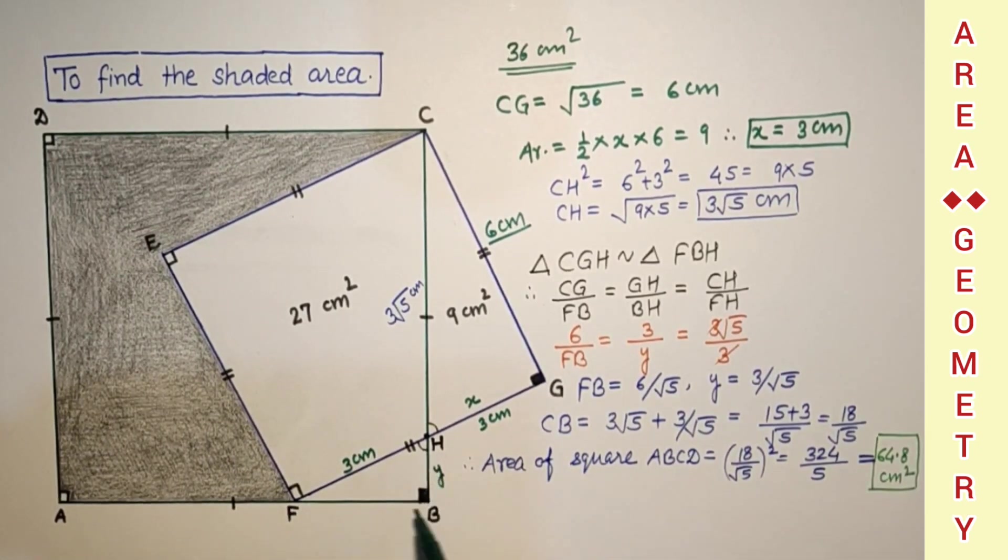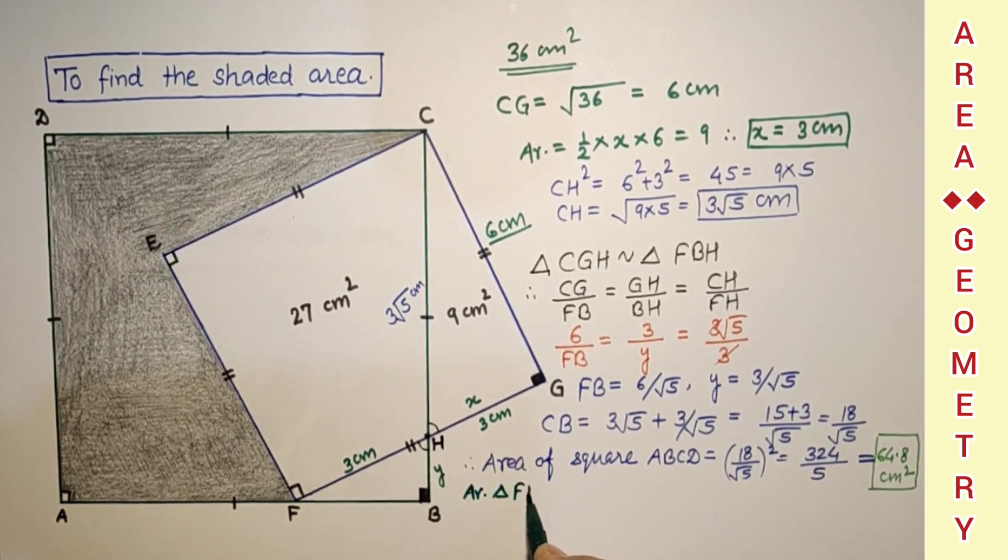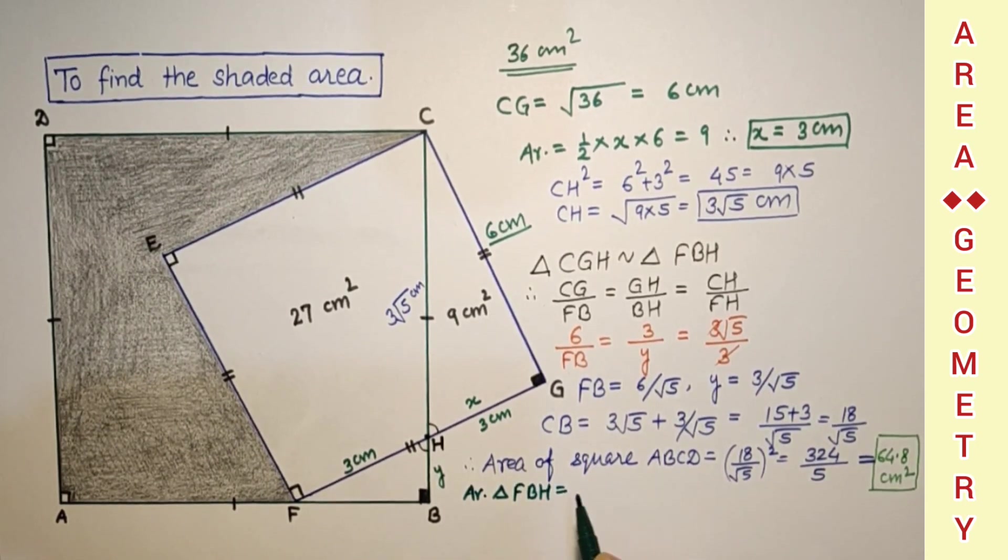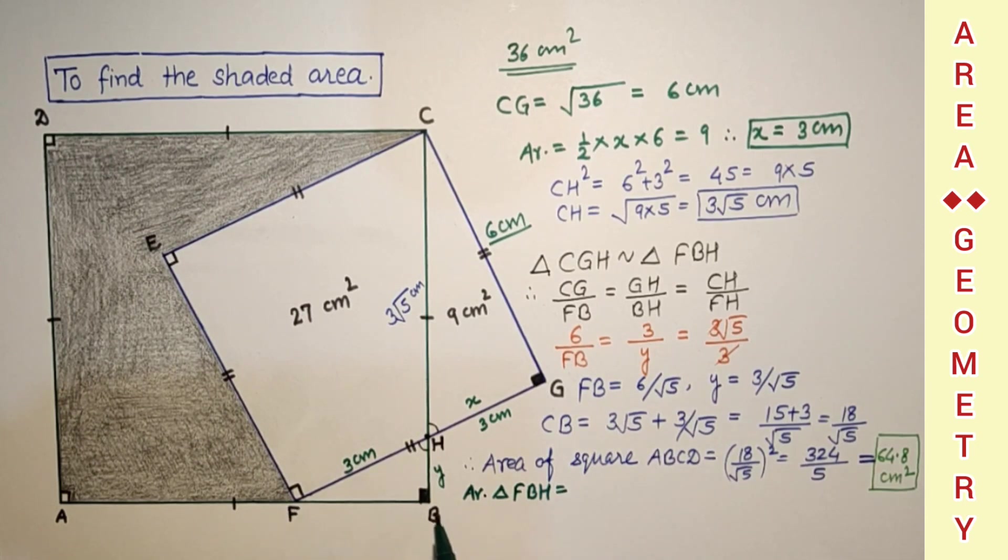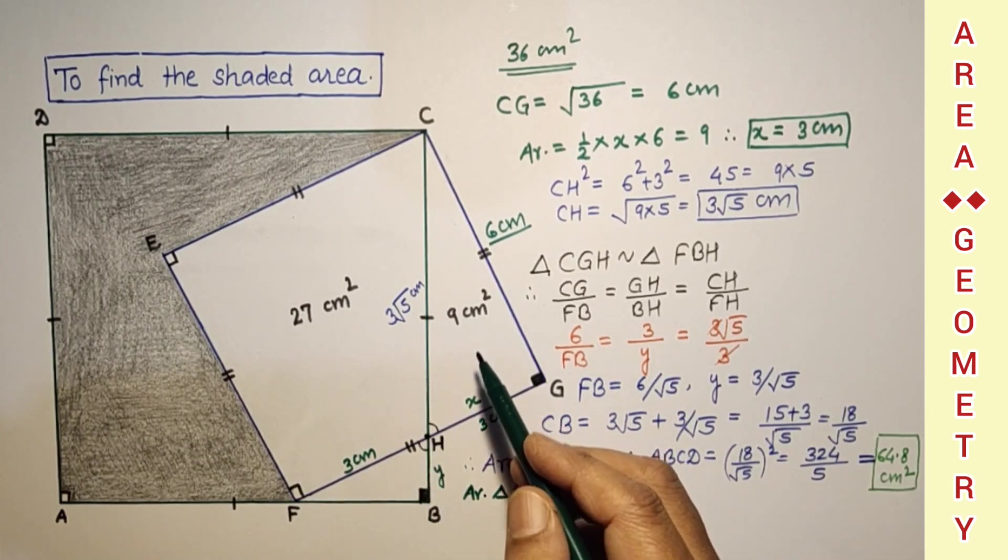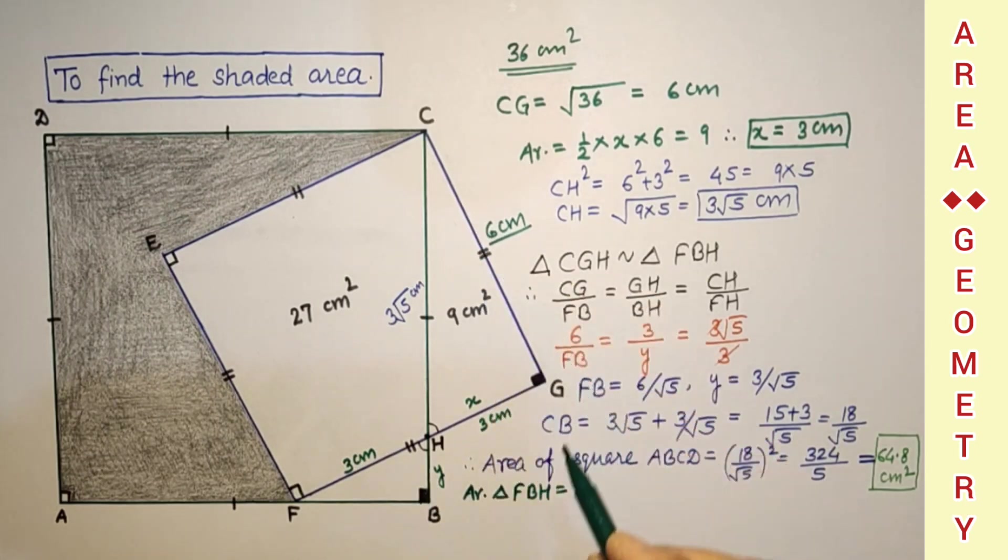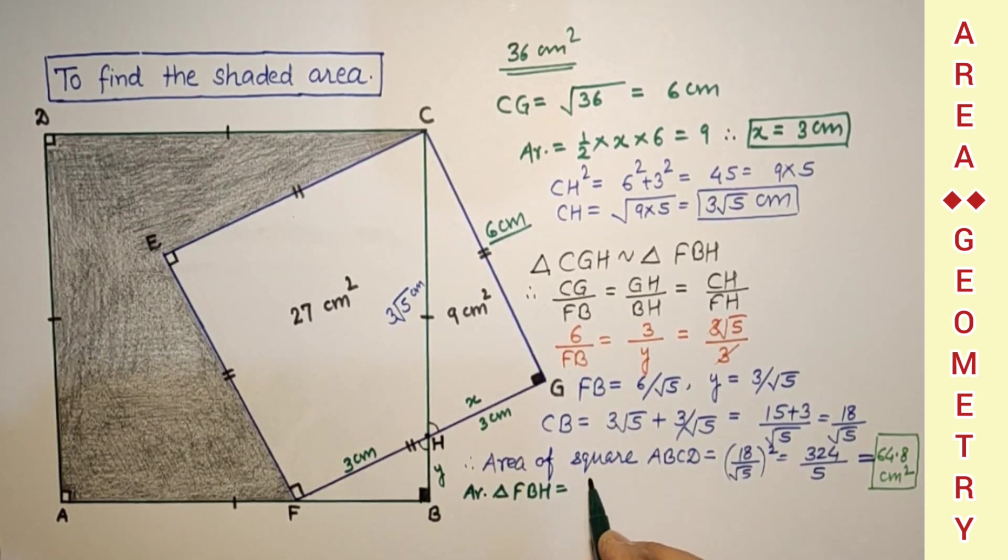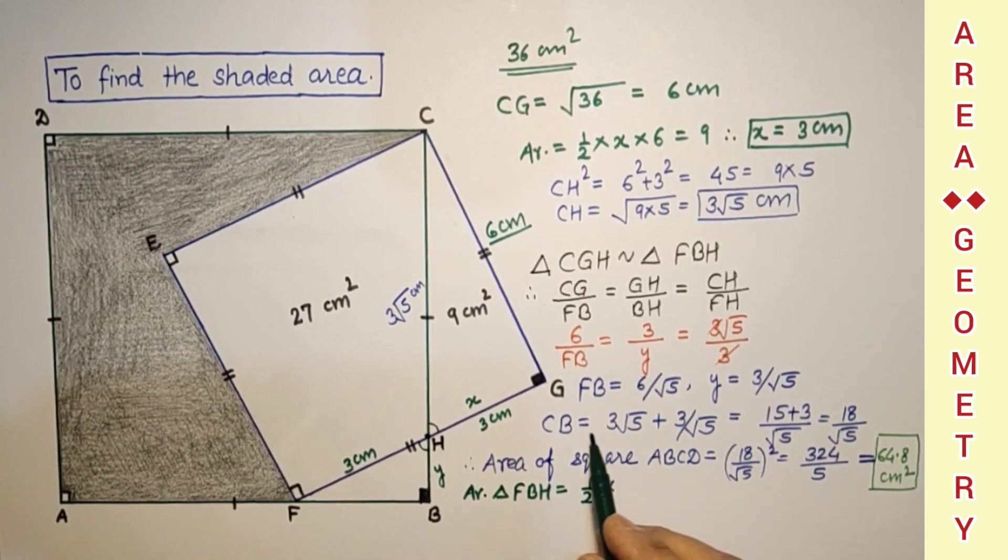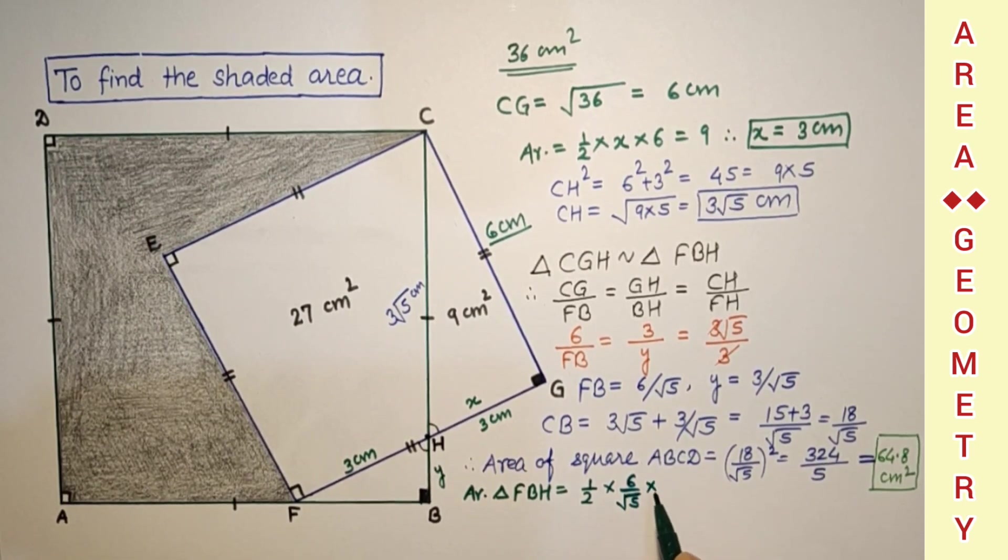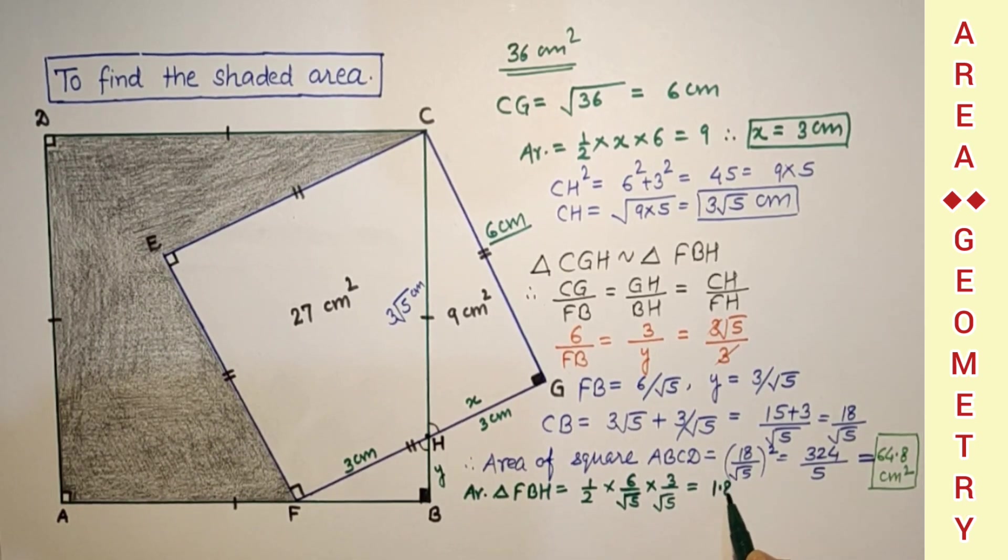Now area of this triangle FBH is equal to, either we can use half into base into height or we can say that half into base FB into height Y, which is 6 by root 5 into 3 by root 5. So that is coming 9 by 5, that is 18 by 10, which is 1.8 centimeter square.